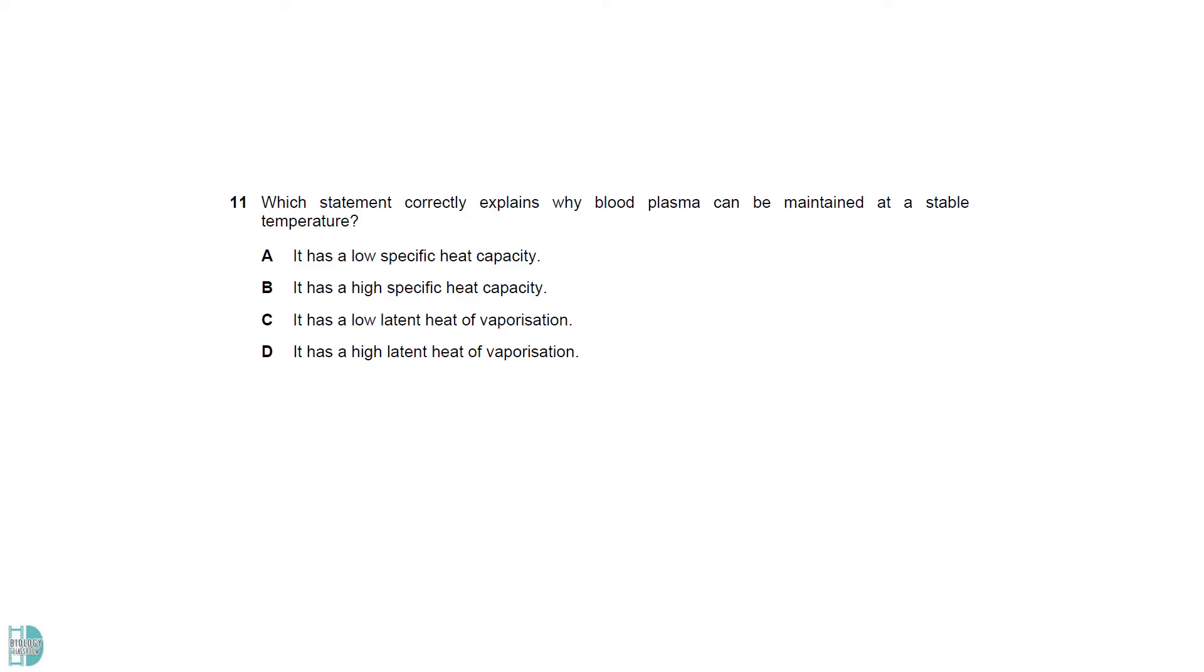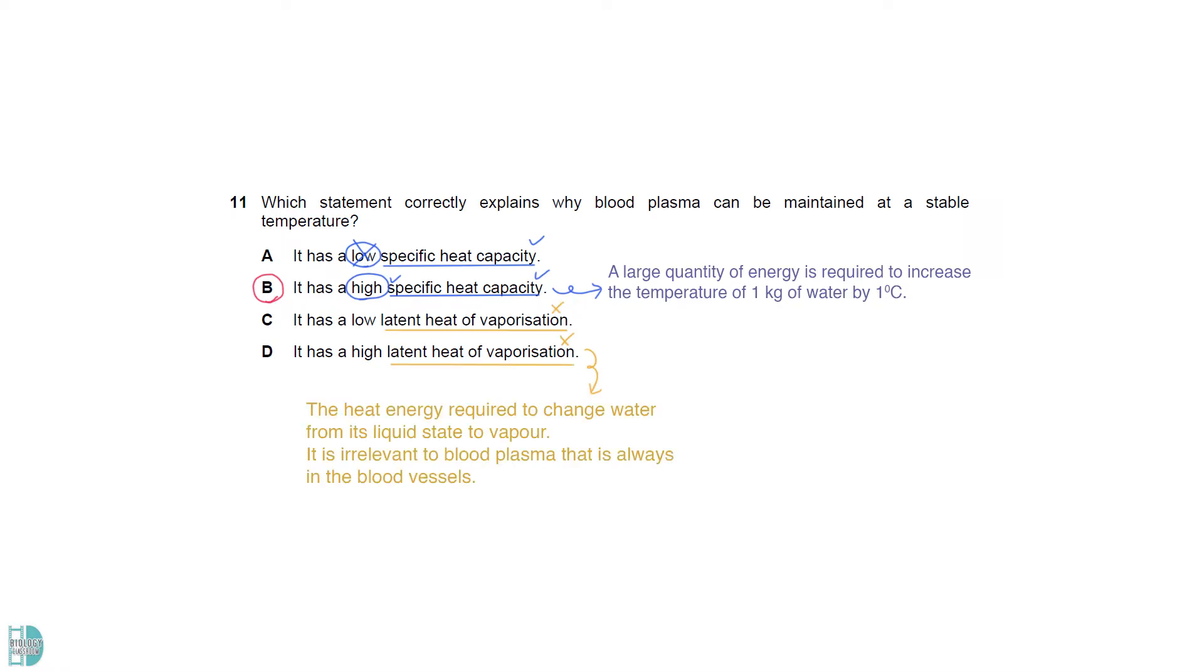The property of water which helps to maintain blood plasma at a stable temperature is the specific heat capacity. Water has a high specific heat capacity, meaning it requires a large quantity of energy to increase the temperature. The heat of vaporization is the heat energy required to change water from its liquid state to vapor. It is irrelevant in this case.